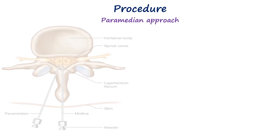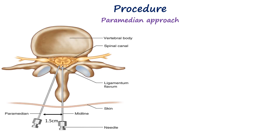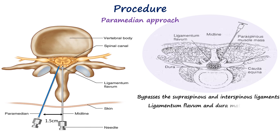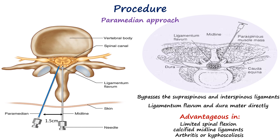In the paramedian approach, the spinal needle is inserted approximately 1 to 1.5 cm lateral to the midline and directed medially toward the spinal canal at an angle of about 25 degrees without cranial or caudal deviation. Unlike the midline approach, this technique does not rely on passing between the spinous processes but instead bypasses the supraspinous and interspinous ligaments entirely. The needle is advanced through the paraspinal muscles directly toward the ligamentum flavum and dura mater, which are then penetrated to reach the subarachnoid space. This approach is particularly advantageous in patients with limited spinal flexion, calcified midline ligaments, or spinal deformities such as arthritis or kyphoscoliosis, as it provides a more direct route to the subarachnoid space without the need to align with the spinous processes.